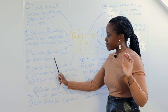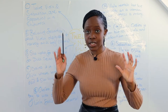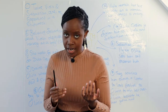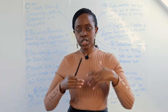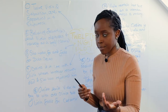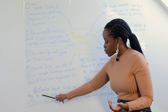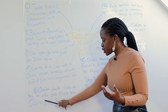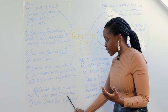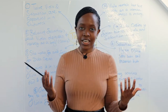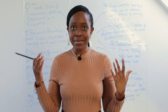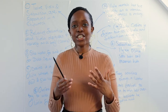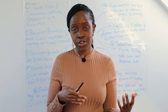Duke Orsino believes that Cesario might be able to navigate this and convince Olivia to marry him. He therefore sends Viola, as Cesario, to try to win over Olivia. This ties into the element of comedy, as once Olivia meets Cesario she feels an instant connection and falls in love with him.